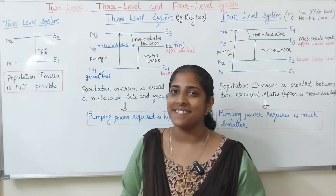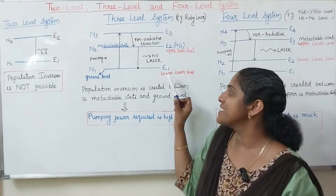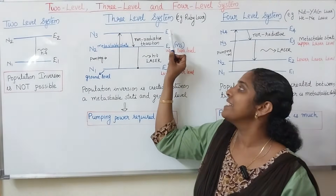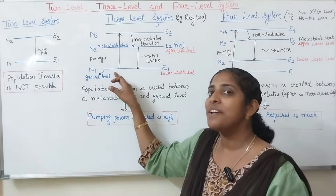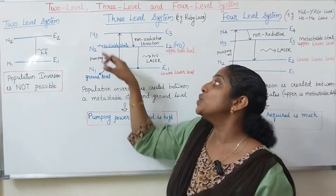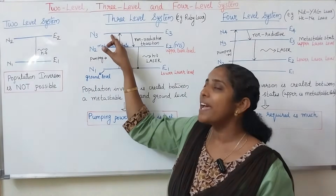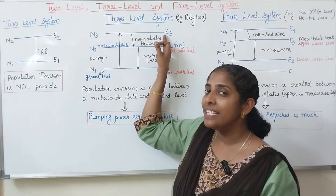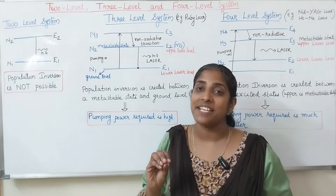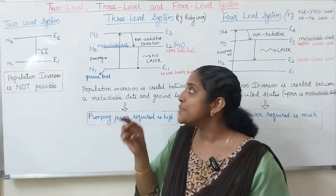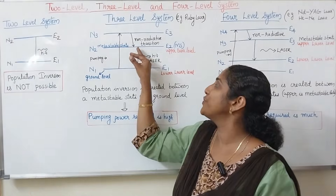Now coming to the 3 level system. In the 3 level system, we have 3 energy levels: E1, E2, and E3. E1 is the ground level, E2 is the metastable state, and E3 is the excited level. By pumping mechanism, we raise the atoms from the ground level to the excited level E3. The lifetime of atoms in the excited state E3 is very short, of the order of 10 raised to minus 8 seconds. So the atoms in level E3 make a fast non-radiative transition to level E2.